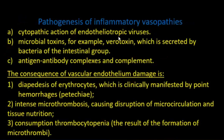Pathogenesis of inflammatory vasopathy involves cytopathic action on endothelium by microbial toxins (e.g., verotoxin), antigen-antibody complexes, and complement. Consequences of vascular endothelial damage include diapedesis of erythrocytes, microthrombosis, and thrombocytopenia.